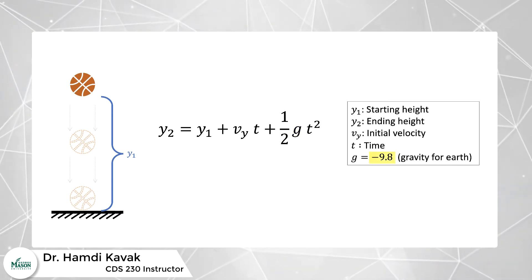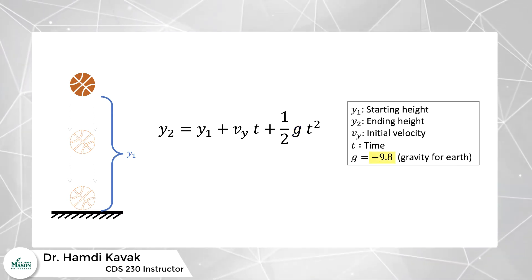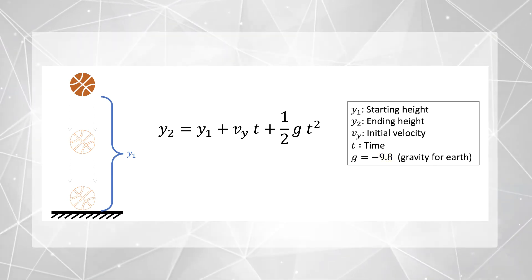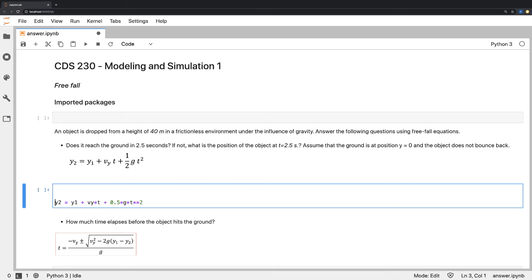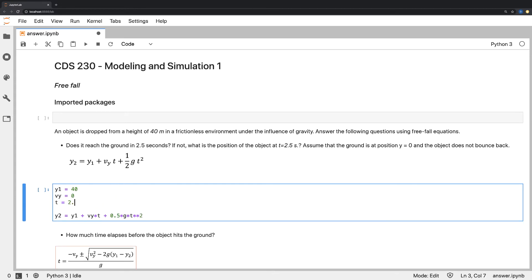Now we simply write the Python code to calculate y₂. Here we transcribe the displacement formula as we did in previous videos. Instead of using 1 over 2, we simply put 0.5, and assign the initial values as given in the question and calculate the position.